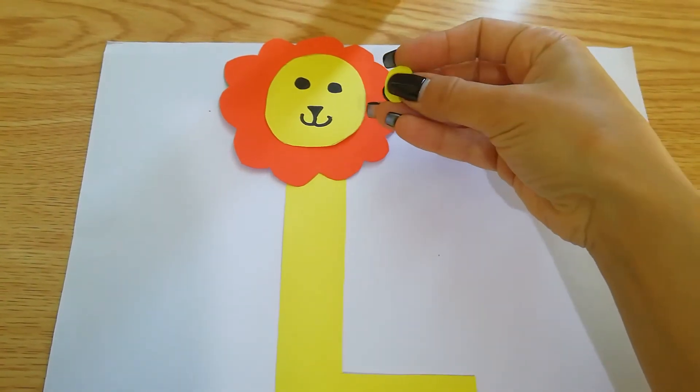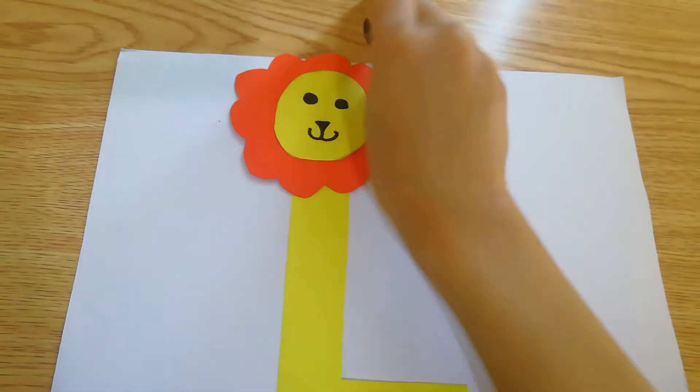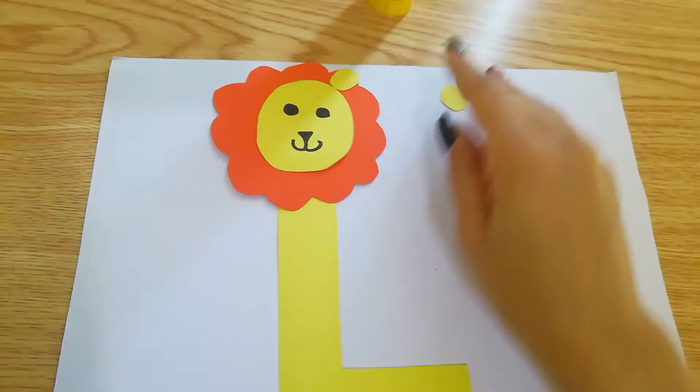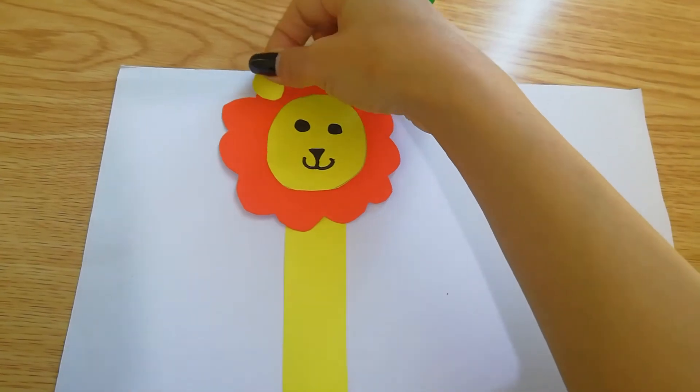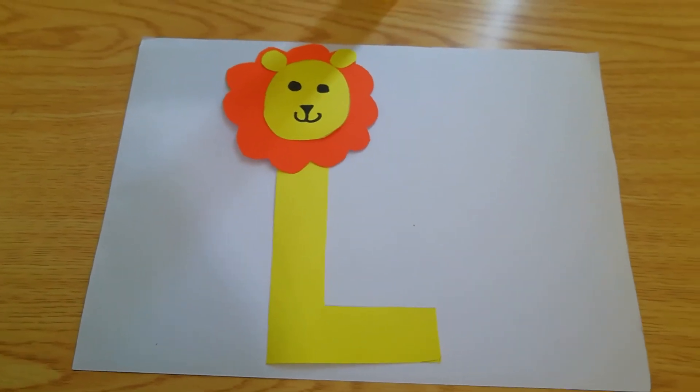Then, we have to cut out two small circles for the ears. And we will place them here, like this. And another ear, like this. Two ears. So, now look, we have a lion.